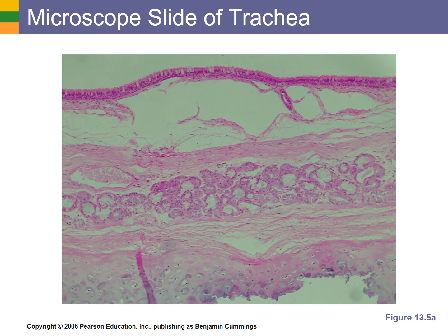This is a slide of the trachea and we're going to start on the lumen side. Here's our open space. Recall that pseudostratified columnar epithelial cells line the lumen of the trachea. You can identify them by looking at the cilia here. Also notice that the nuclei bounce around a little bit. Notice that we have goblet cells — everywhere you see this little sort of off-white area, that's mucus being produced by the goblet cells.